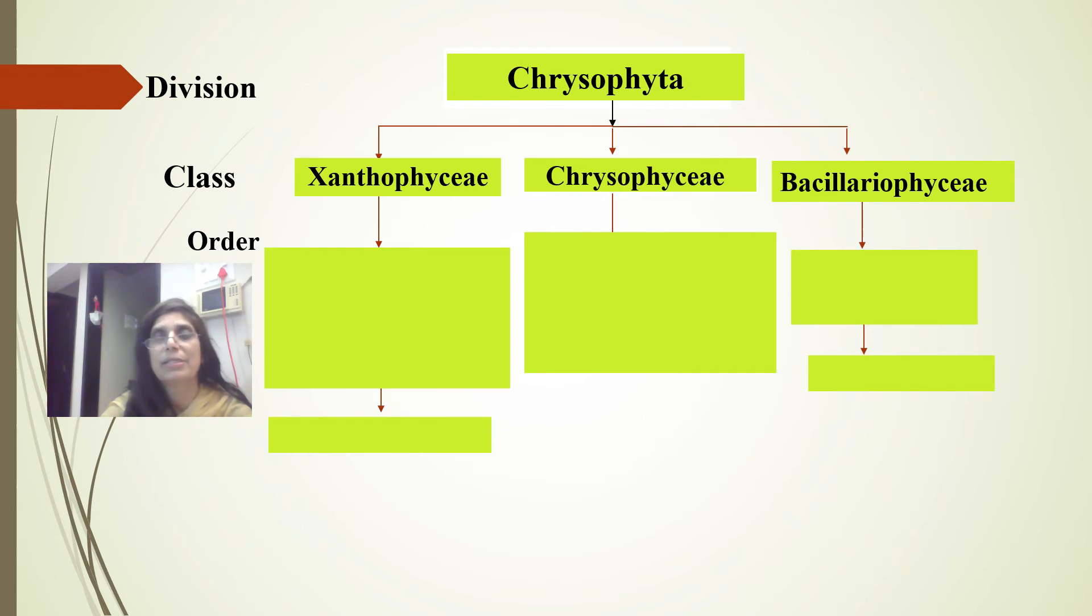We have mostly the diatoms; they are grouped in Bacillariophyceae. In Chrysophyceae, some of the organisms have naked protoplast. In Xanthophyceae, you can see the yellowish-green chromatophores.